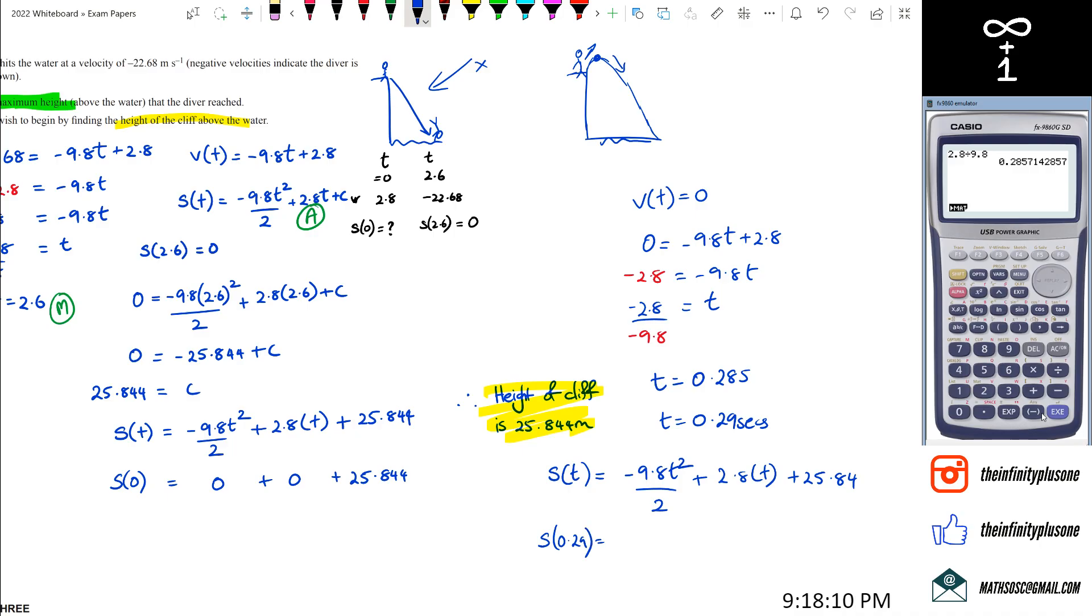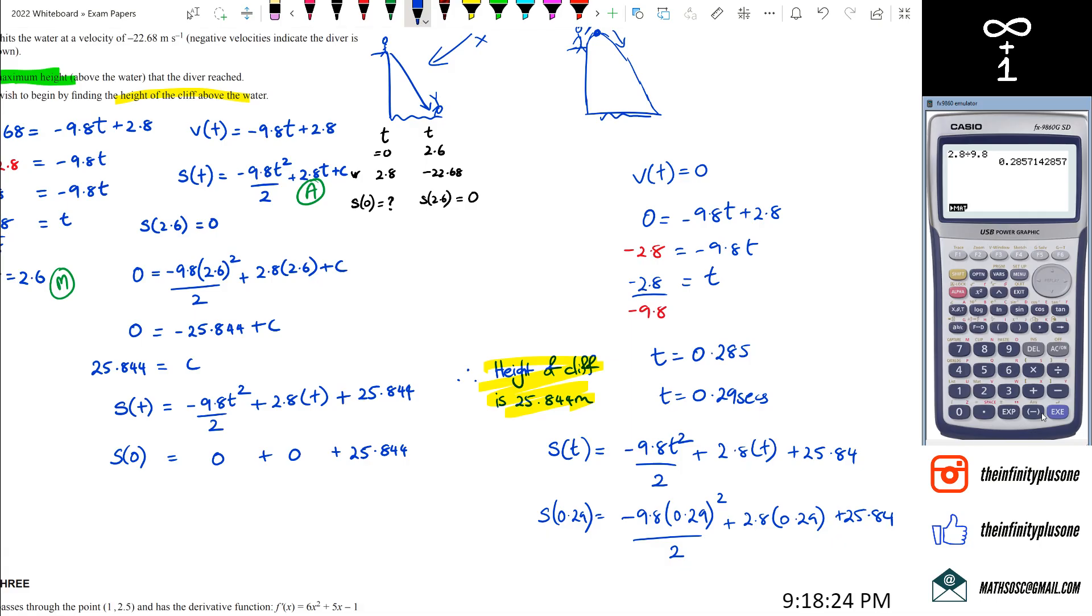What we need to do is substitute 0.29 as our t value—2.8 × 0.29 + 25.84. Because I've got this as my answer, I'm going to use the answer function here. So I've got -9—let's just get rid of that.